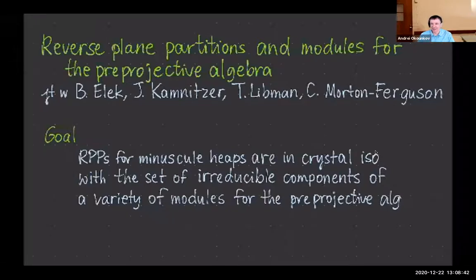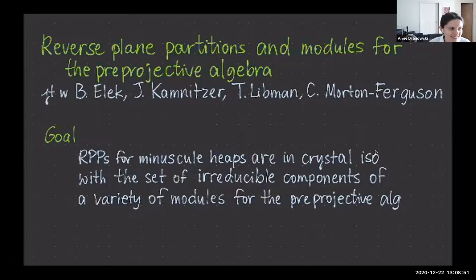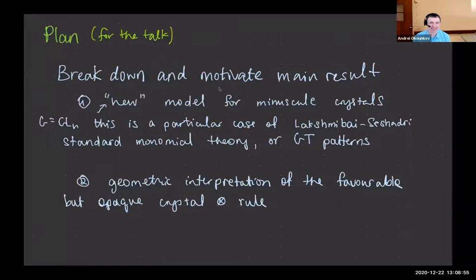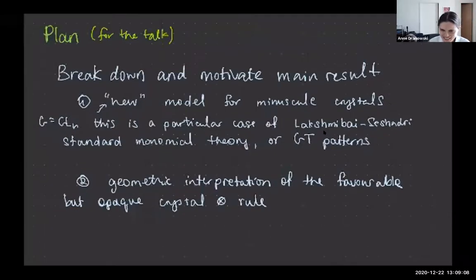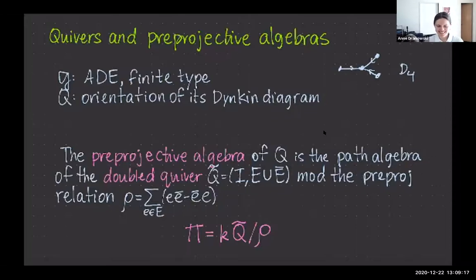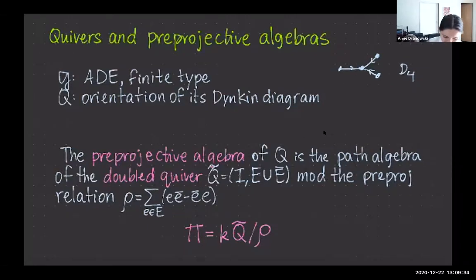There was a brief slide-sharing issue — the speaker was on slide one while the audience still saw 'Plan for the Talk,' resolved by switching to show D4. So this is D4, and this is D4 with an orientation — this is a quiver. The pre-projective algebra associated to this oriented Dynkin diagram is the path algebra of the double quiver, where 'double' means we enhance this graph by throwing in oppositely oriented edges, modulo the pre-projective relation. From the point of view of the quiver, it's telling us to mod out by the sum of the length-two paths coming in and out of any given vertex.